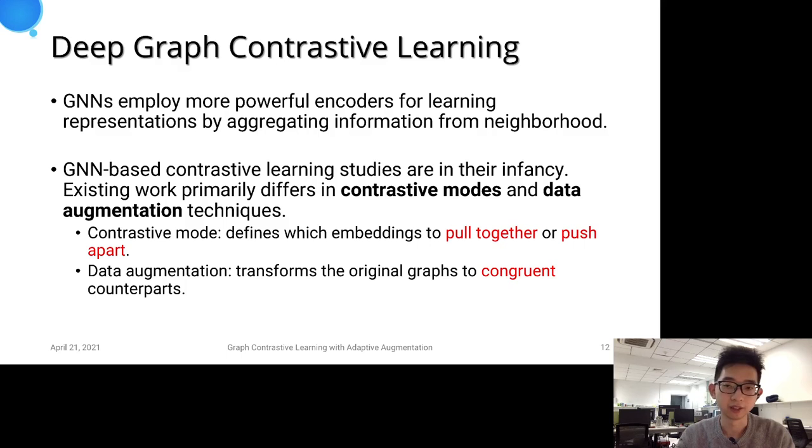We now turn our attention to GNN-based contrastive learning, since modern GNNs employ more powerful encoders for learning representations by aggregating information from the neighborhood. However, GNN-based contrastive learning are still in their infancy.